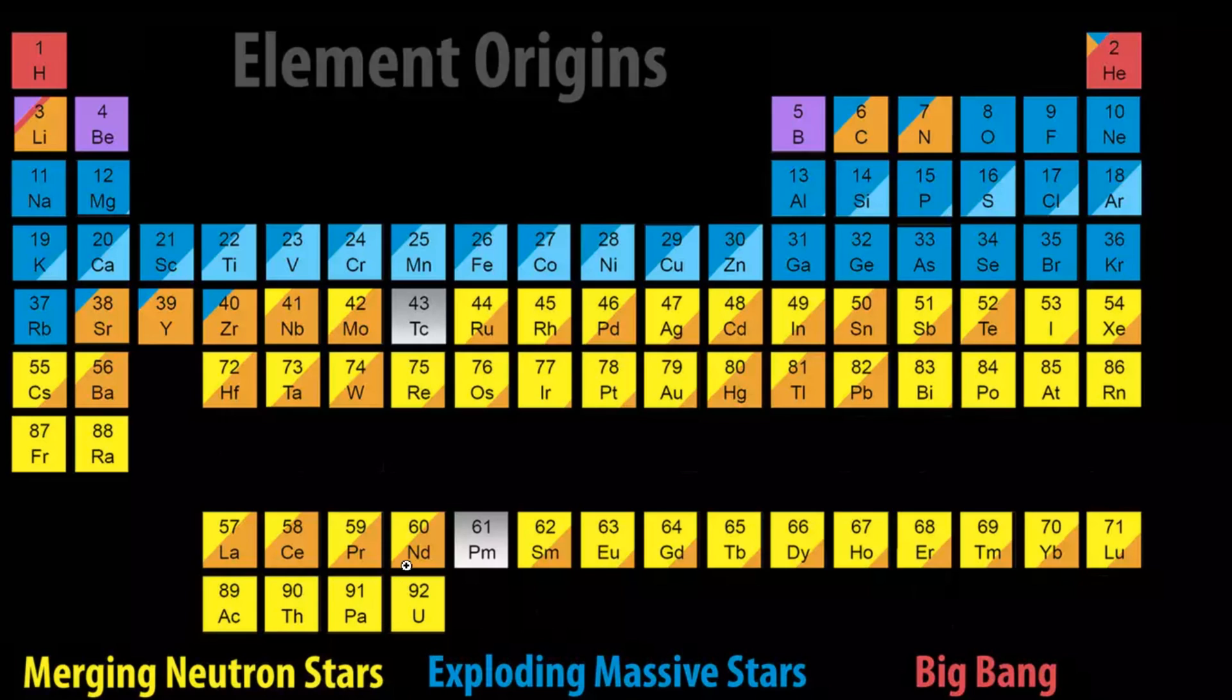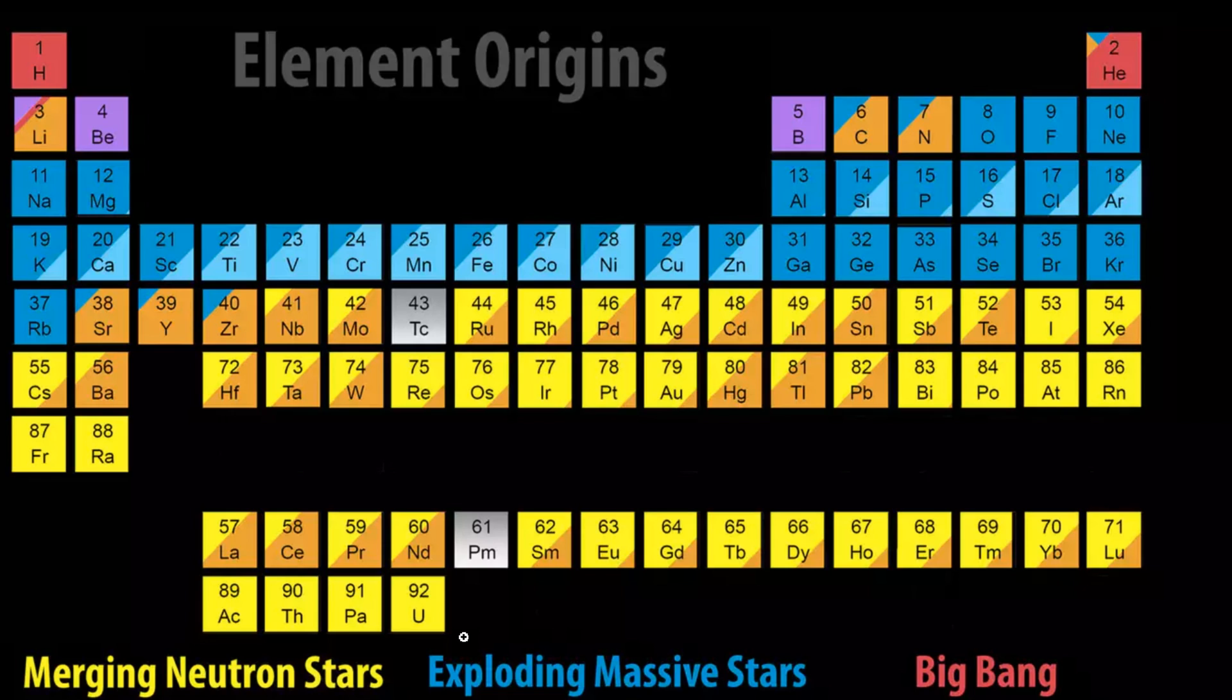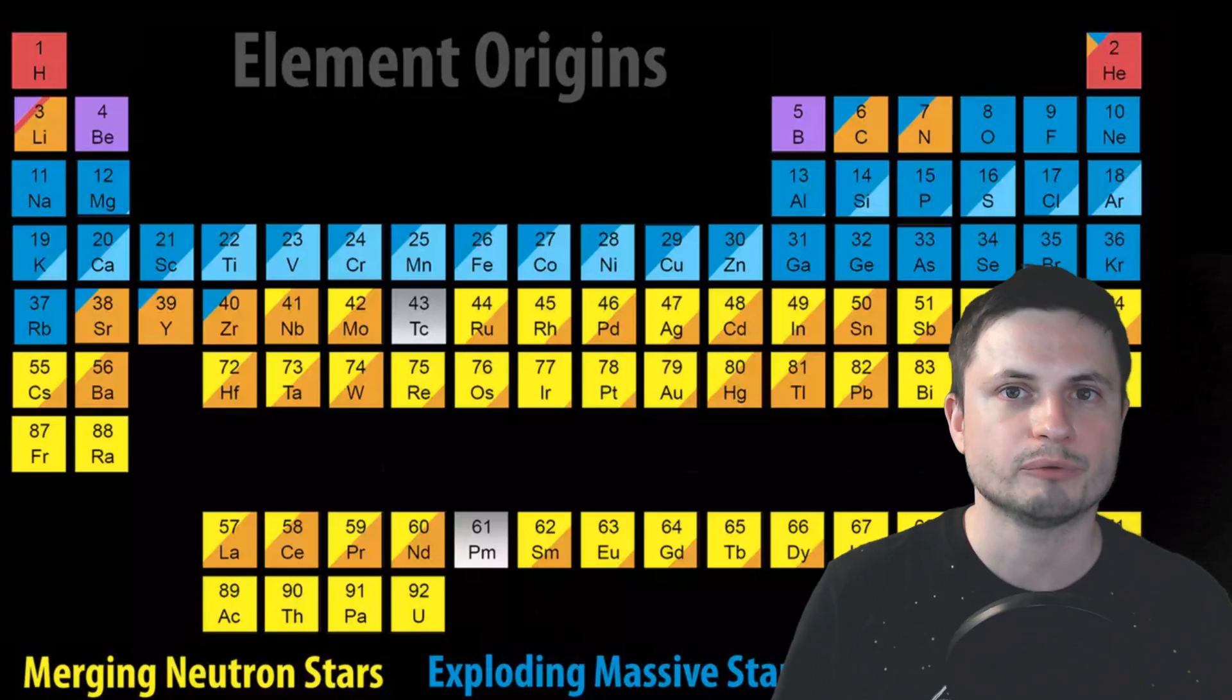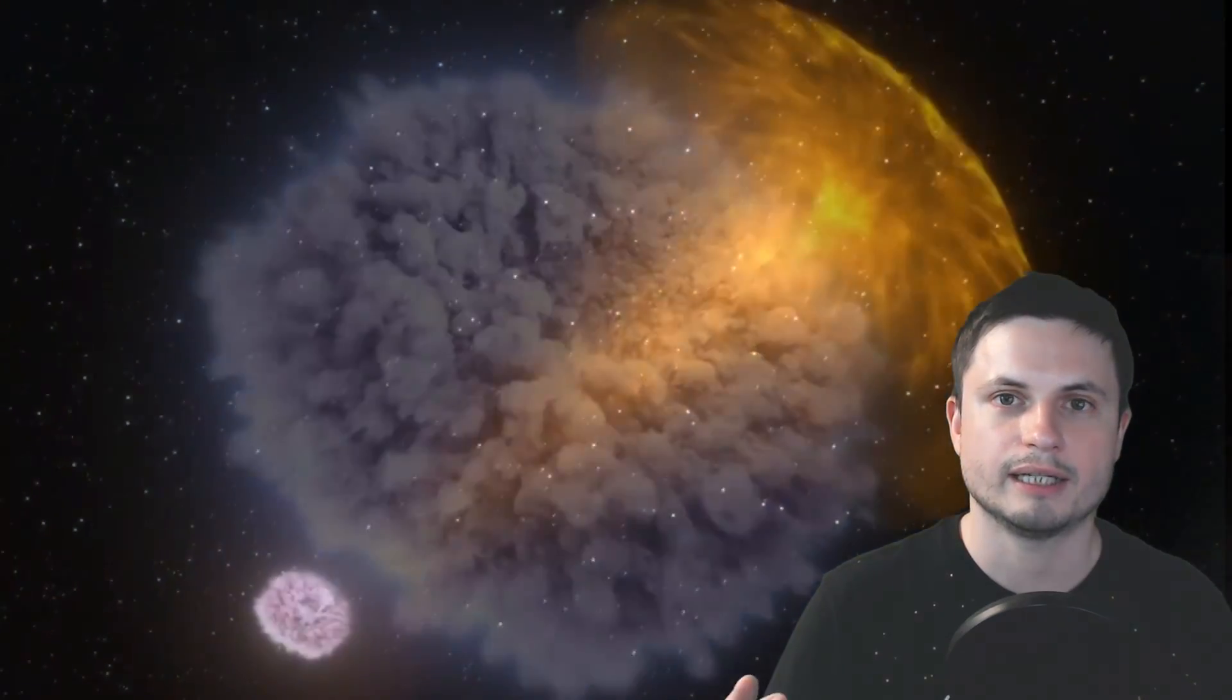And as you can see, uranium is also one of those things that's made only in the neutron star collision, meaning that these tremendously powerful events are responsible for producing our nuclear reactors. So everything we use for nuclear power today was one day created in this super powerful explosion billions of years ago before our planet Earth was formed and all these materials were then spread across the galaxy and many of them made it to our solar system where it's now deposited on planet Earth, mined by humans and used for energy.